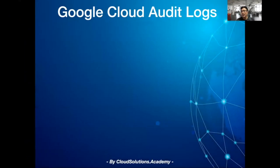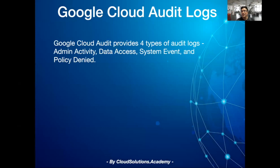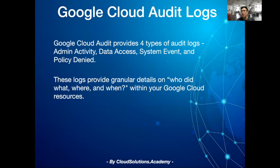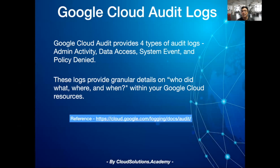Apart from Google Cloud Armor service, you should also be aware of cloud audit logs provided by Google Cloud. Google Cloud audit provides four types of audit logs: admin activity, data access, system event, and policy deny. These logs provide granular details on who did what, where and when within your Google Cloud resource. For details, please refer to the documentation.